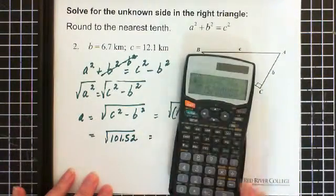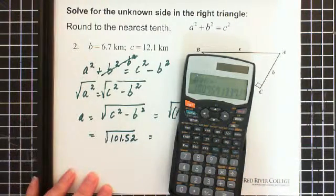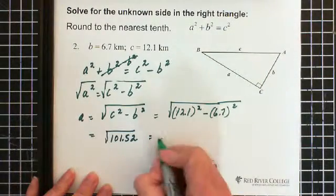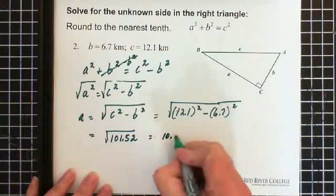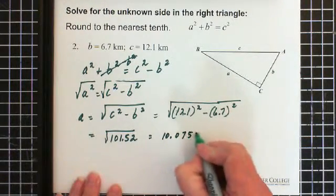Now all you have to do is square root that, and we end up with 10.0757. Let me write it all down: 10.0757.